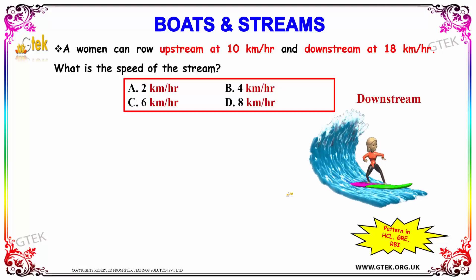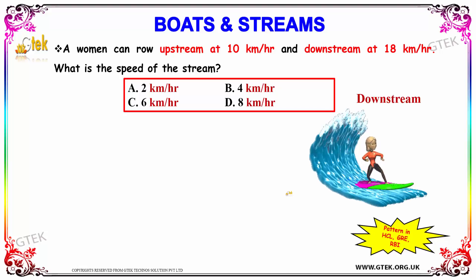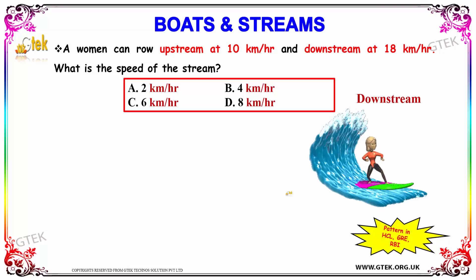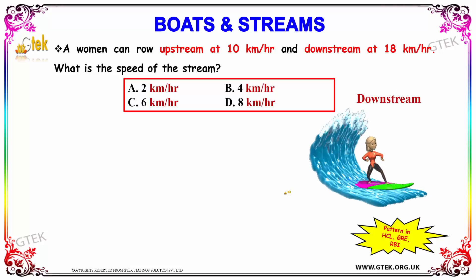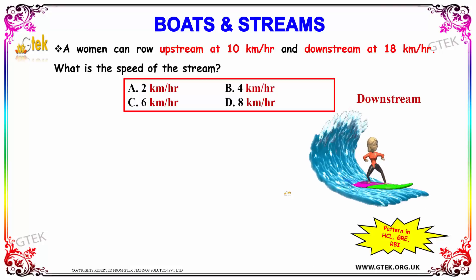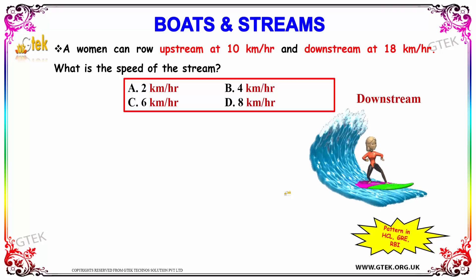A woman can row upstream at 10 km per hour, so that is the speed of upstream, and downstream at 18 km per hour, so that is the speed of downstream. What will be the speed of the stream? The speed of the stream is what you have to calculate.